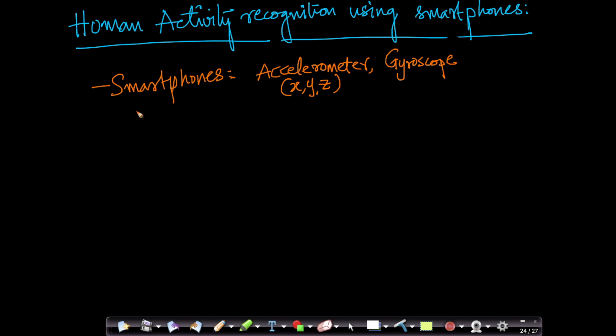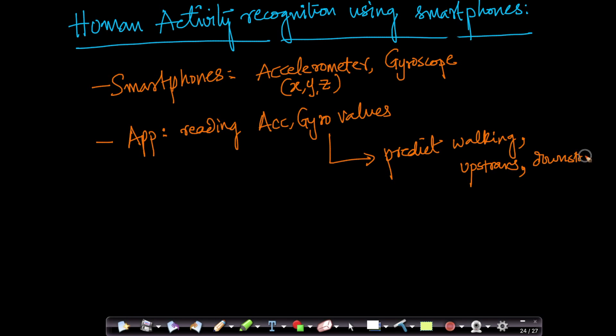There is another very interesting application of smartphone accelerometers and gyroscopes. Imagine that on my smartphone there is an app which is constantly reading my accelerometer and gyroscope values, and by looking through these values, it can predict whether I am walking normally, walking upstairs, walking downstairs, lying down, or sitting. All these are called human activities.